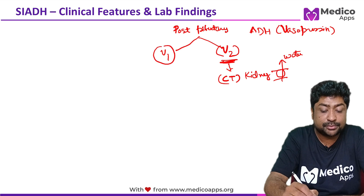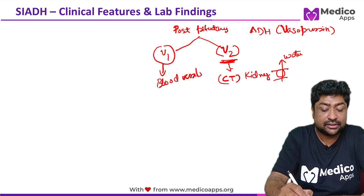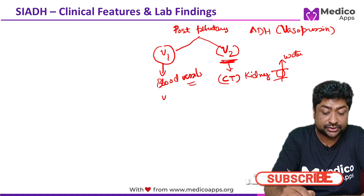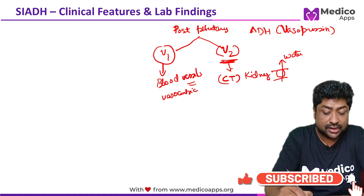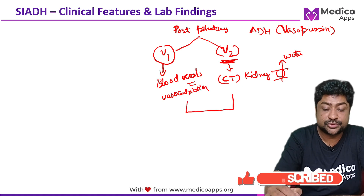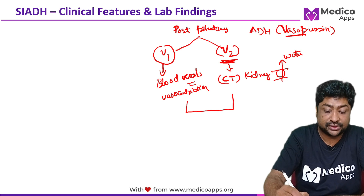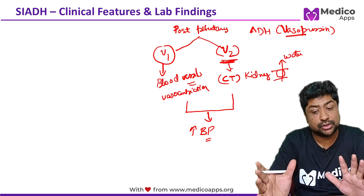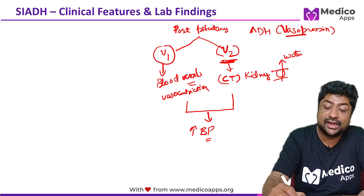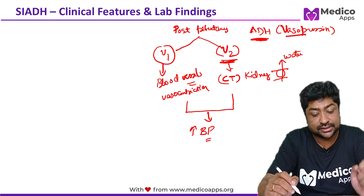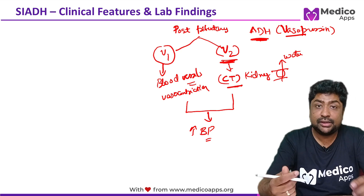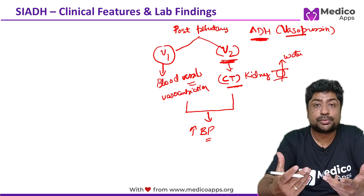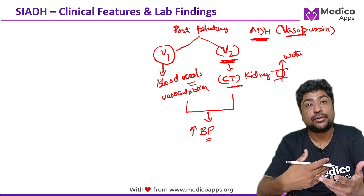V1 receptors are present in blood vessels and they cause vasoconstriction. Under normal circumstances, both V1 and V2 effects of vasopressin help in increasing blood pressure. Now, in SIADH, because of some primary pathology, there is an increase in ADH secretion. Due to this increased vasopressin, a lot of water will be reabsorbed by the kidney.